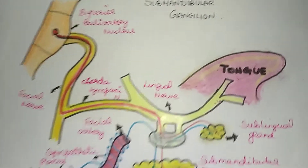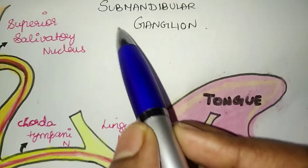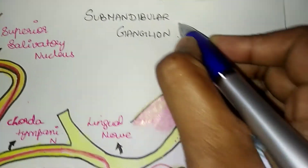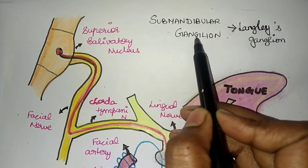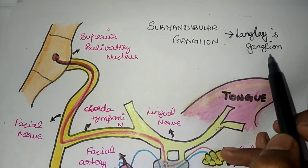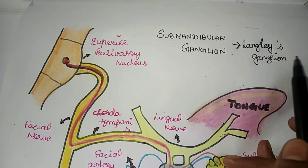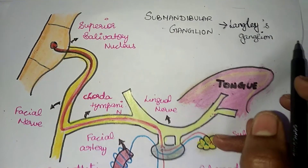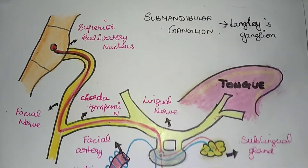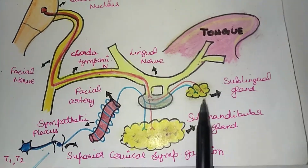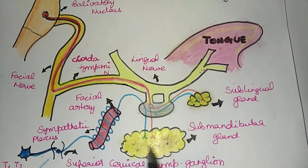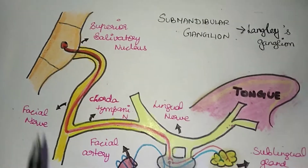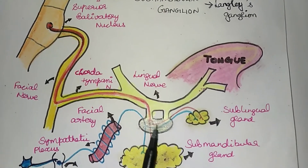Welcome to MBBS Tamil. We will talk about the subject of submandibular ganglion. Submandibular ganglion is also called Langley's ganglion. It is a parasympathetic ganglion that gives secretomotor fibers for the submandibular and sublingual glands.